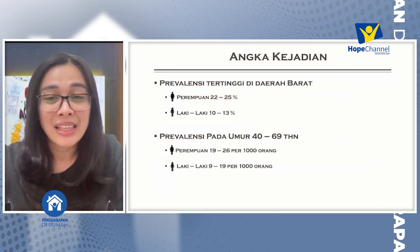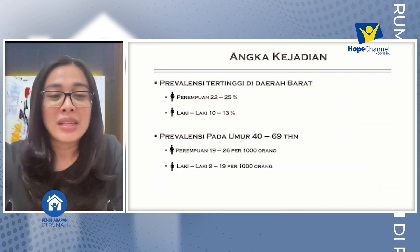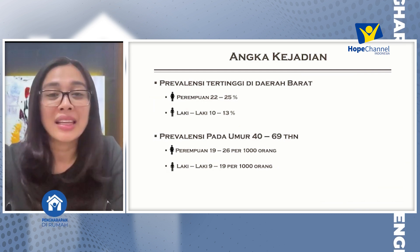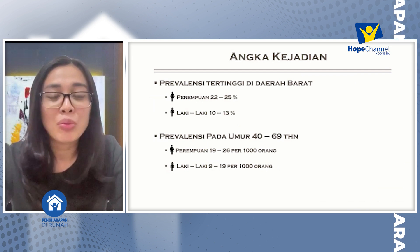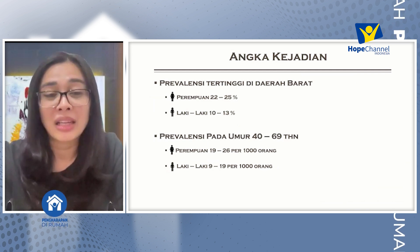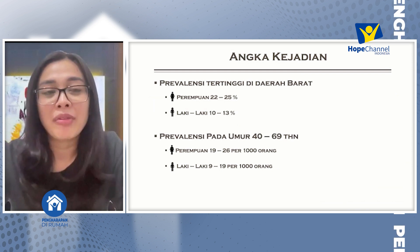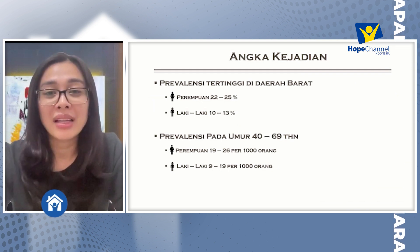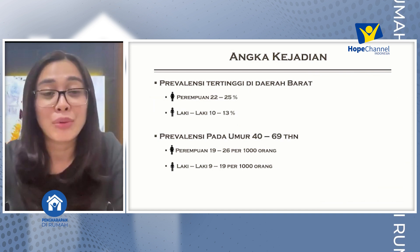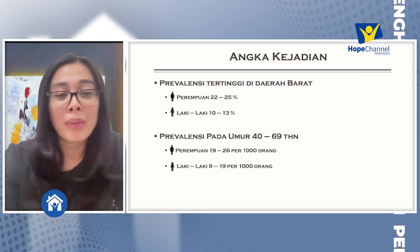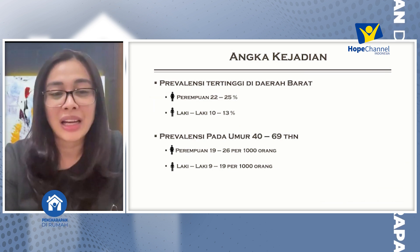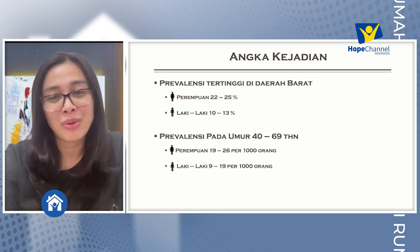Kita masuk dalam angka kejadian dari varises. Biasanya angka kejadian varises ini memang paling sering menyerang pada perempuan ketimbang laki-laki, menyumbang angka cukup besar, sekitar 22-25% dibandingkan dengan laki-laki. Kemudian prevalensinya untuk usia biasanya lebih rentan pada usia tua, yaitu pada usia 40-69 tahun, yaitu pada perempuan 19-26 per seribu orang, sedangkan pada laki-laki adalah 9-19 per seribu orang.